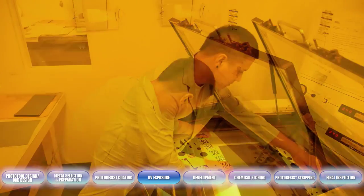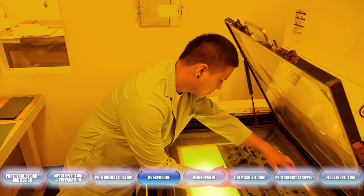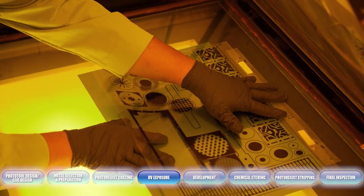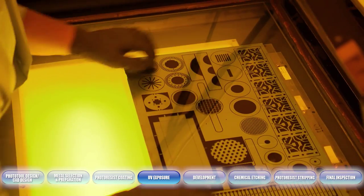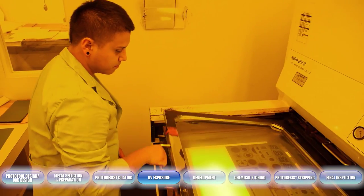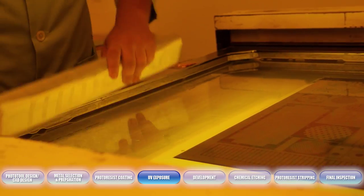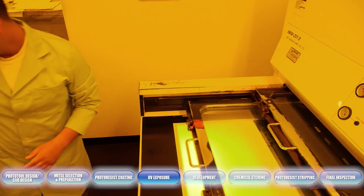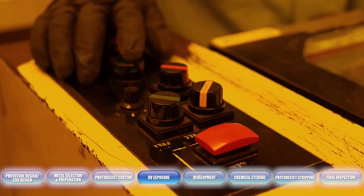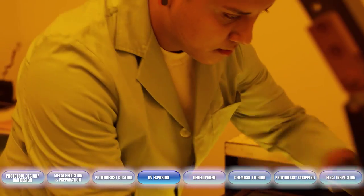After the metal is coated, it goes into the exposure unit between two pieces of film that has been created from your file where it's exposed on the top and the bottom by UV light. Where the light goes through the film, the resist becomes very hard or polymerizes. Where the resist is shaded, the resist stays soft.